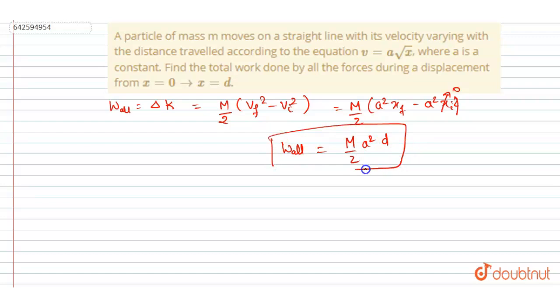Now the second method is: find out the acceleration first. So this is given here. Just square the term, you will get this. And if you differentiate both sides, you will get a square. So v dv by dx is the acceleration, that equals a square by 2.